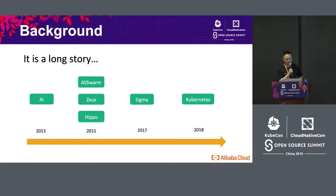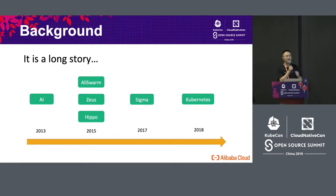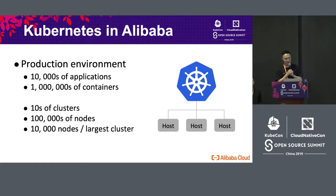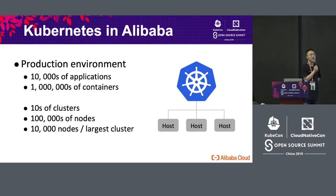We will talk about the resource management and scheduling history. In 2013, we used an AI system to control our resources. In 2015, we used Swarm to develop our distributed scheduler system. In 2017, we used the Sigma system. In 2018, we initiated Kubernetes as a new engine for resource allocation and scheduling. Within Alibaba, we have 10,000 applications covering Tmall, Taobao, and other applications.